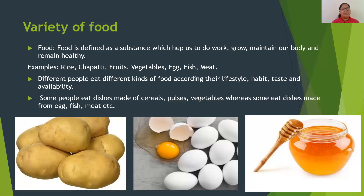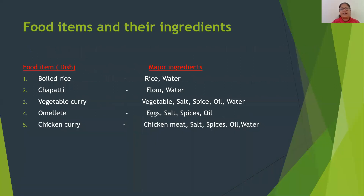What do we mean by dish? A dish is a food item which is made of particular substances. These particular substances are termed as ingredients. Let us see different food items — the dish and the particular substances used to make it are called ingredients. For example, boiled rice has ingredients rice and water; chapati has two major ingredients, flour and water.